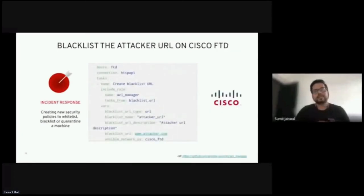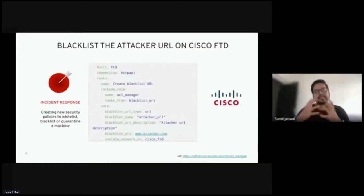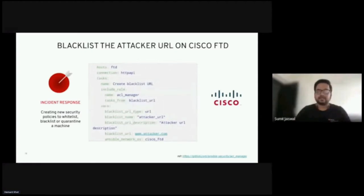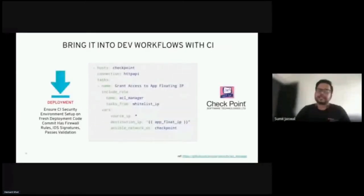Continuing on the same incident response use case, here we are using Cisco Firepower Threat Defense — Cisco FTD — to deny access via creation of a security intelligence URL policy. This highlights that in a single playbook we can remediate the situation across multiple devices in the infrastructure from multiple vendors. This capability will continue to grow and expand as we keep adding new vendors and partnering with new vendors to come up with Ansible integrations.